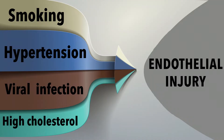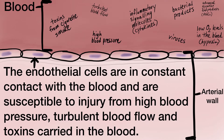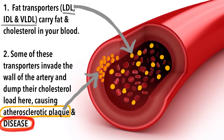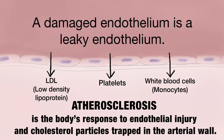The innermost layer of the arterial wall is called the endothelium. The endothelium can be injured by chronic high blood pressure, toxic gases generated by smoking, viruses, and high levels of fat transporters, or LDL, in the blood.